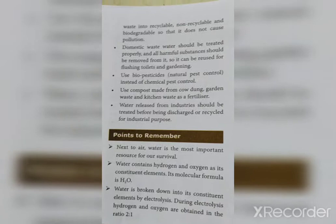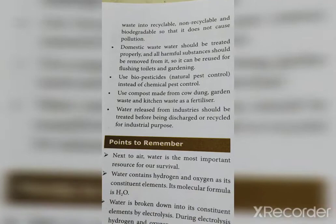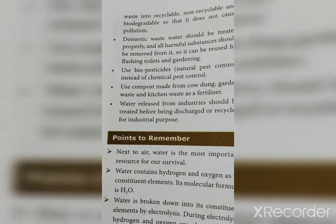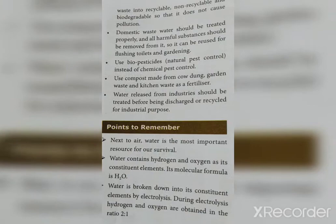Use bioplastics and natural pest control methods instead of chemical pest control. Use compost made from cow dung, garden waste and kitchen waste as fertilizer. Water released from industry should be treated before being discharged or recycled for industrial purposes.